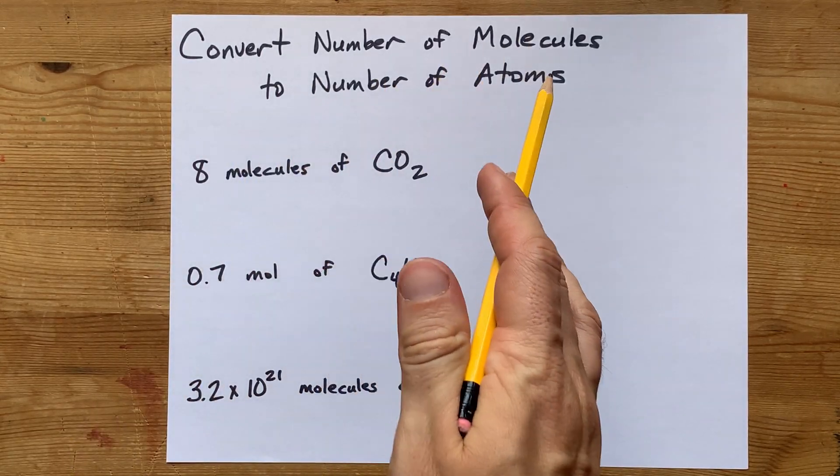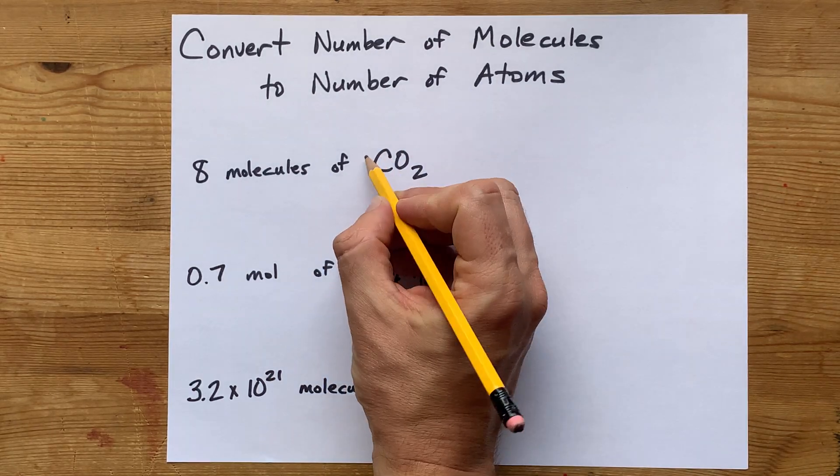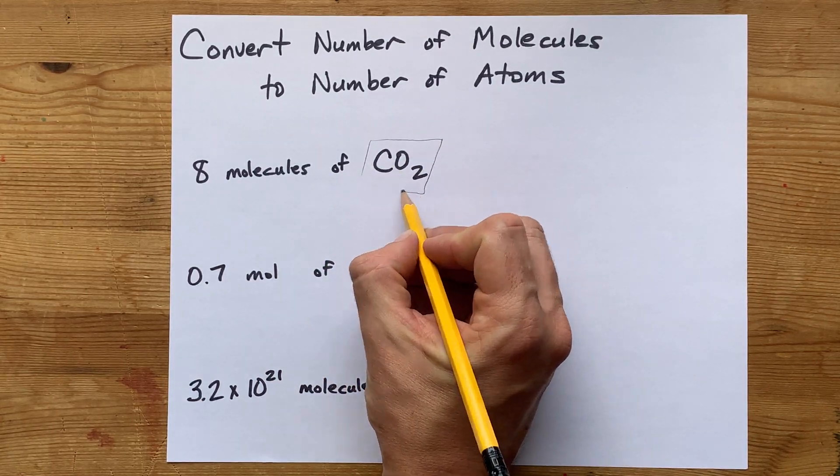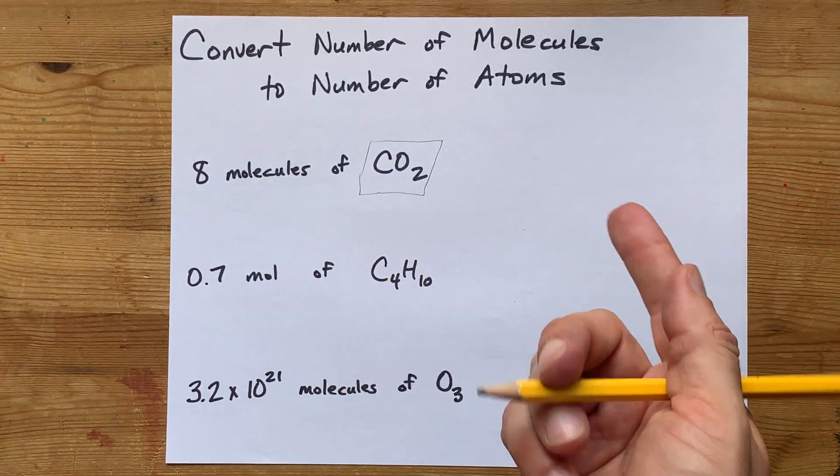To convert a number of molecules into a number of atoms, you have to know how many atoms are in each of the molecules. That's what the formula is for.